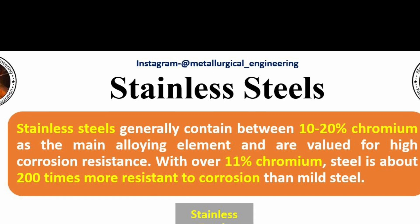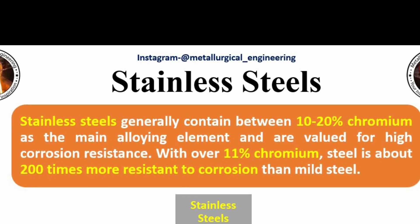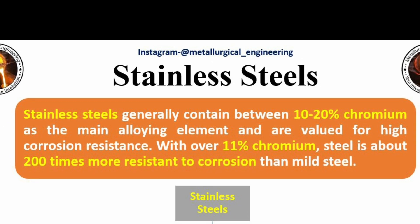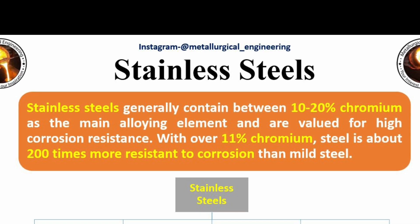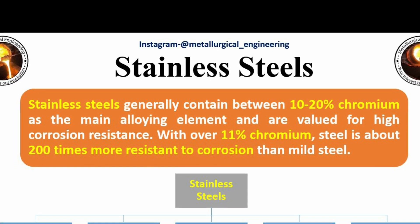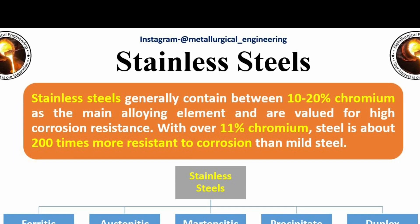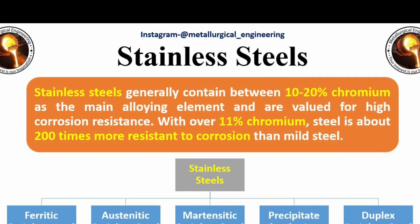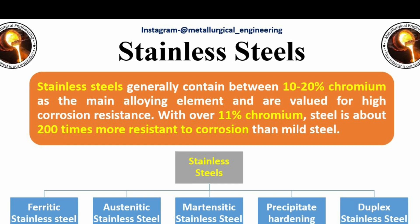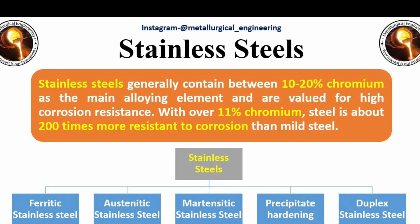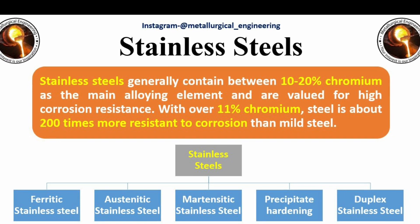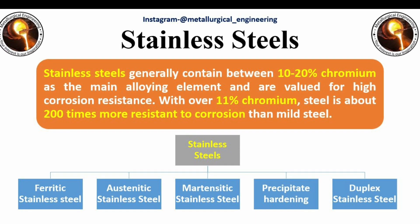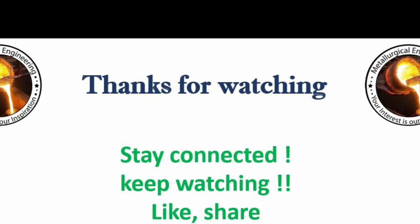Stainless steels can be further categorized into five groups: 1. Ferritic stainless steel, 2. Austenitic stainless steels, 3. Martensitic stainless steels, 4. Precipitation hardened stainless steels, and 5. Duplex stainless steels. We will discuss more information about these different types of steel in upcoming videos.